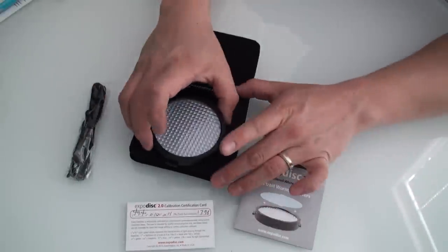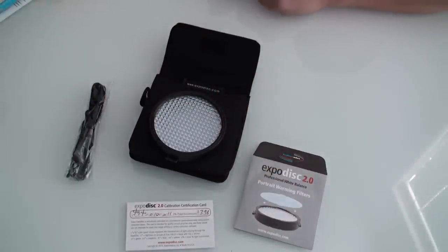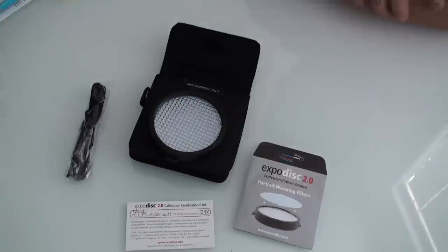So ExpoDisc 2.0 here is the second generation of Expo Imaging's award-winning ExpoDisc 1 that allows photographers and videographers alike to be able to set a perfect 18% neutral white or neutral gray white balance on their cameras to give you the best possible color imaging.